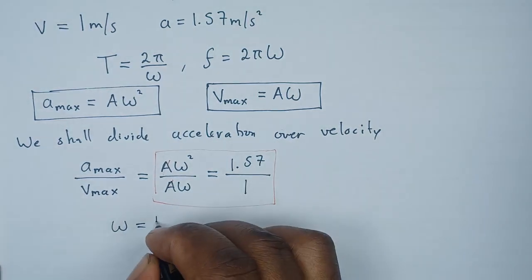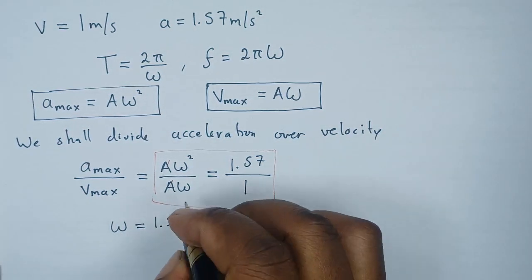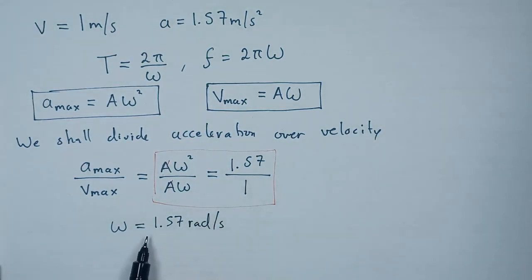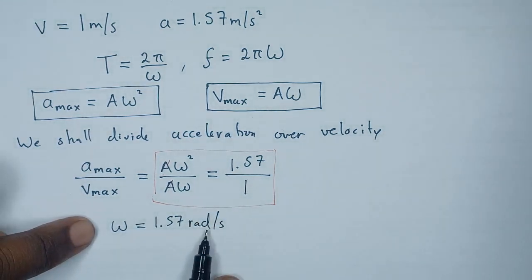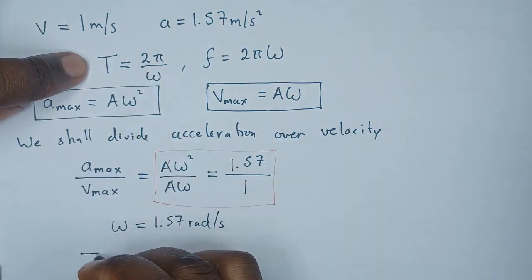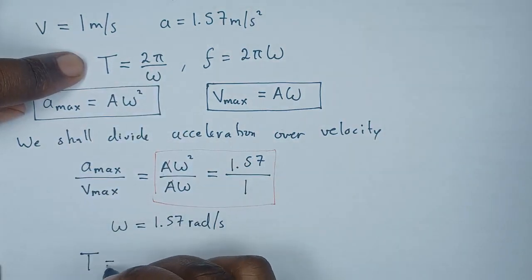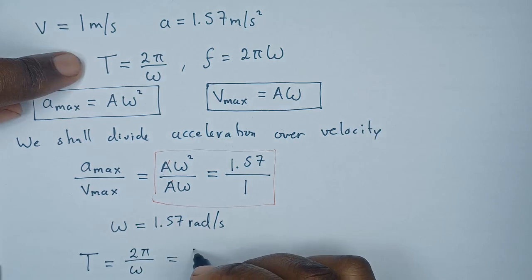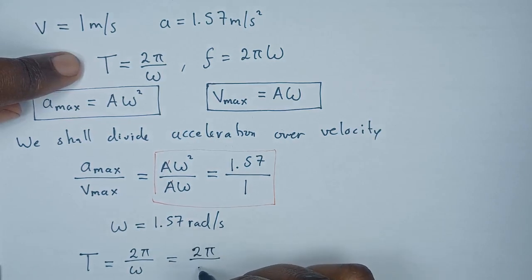So now that we have the angular frequency, we can easily calculate the period. We said that period T equals 2π over ω, so this is as good as saying 2π divided by 1.57.